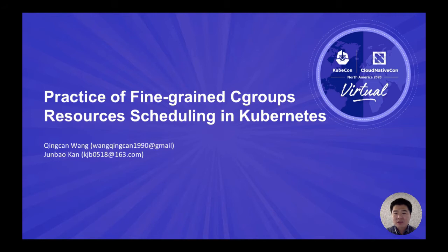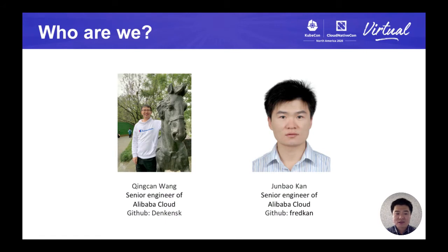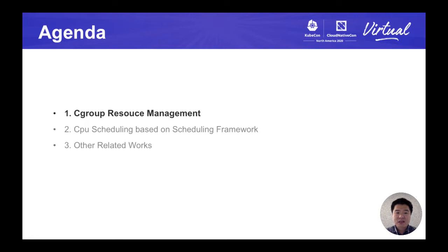The scheduler perceives the cgroup's node resources such as NUMA, CPU, and memory limits, and applies dynamic scheduling to specified nodes, while allowing certain pods to be bound to specified CPU cores. The cgroup controller can also dynamically adjust pod resource limits without causing the pod to restart. This is the agenda for today's topic. In the first part, I will introduce our practice of cgroup resource management. Then my colleague Qingcan will talk about CPU scheduling based on the scheduling framework, and also about some other related works.